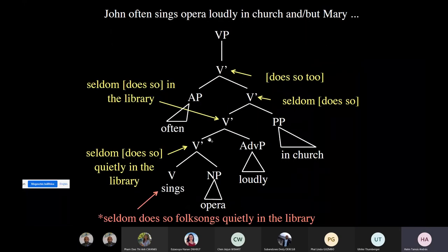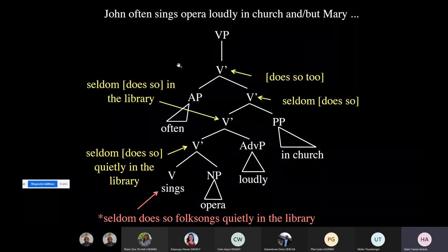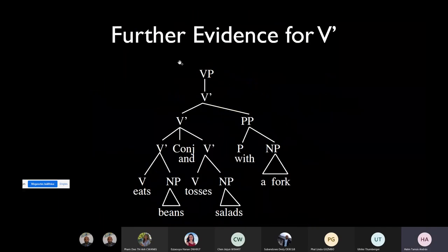There is one interesting point at the top. Why is it that VP is not branching in two directions — why does it only go down and there is nothing above? That's an interesting question, and later on we will see what's going on here, but for the time being this has to remain a secret. I think this is roughly where we stopped.